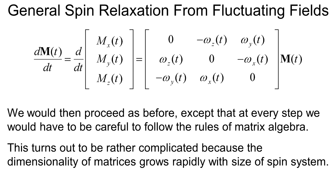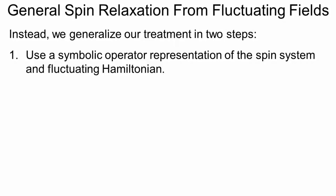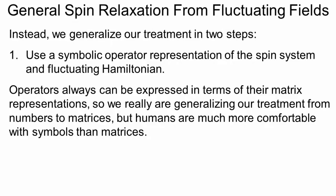What we're going to do is replace the matrices with symbolic operators and work out an operator algebra to solve the problem, because our brains are better suited to thinking about symbols than matrices. If we did the calculation all in matrices, it would be difficult to look at the results and learn interesting simplifications or interesting facts about relaxation. So another advantage of switching to an operator description is that we'll be able to discern insight into important features of relaxation. We're going to use operator representations of the spins and the Hamiltonians, but operators all have matrix representations, so if we get stuck we can always revert to matrices.